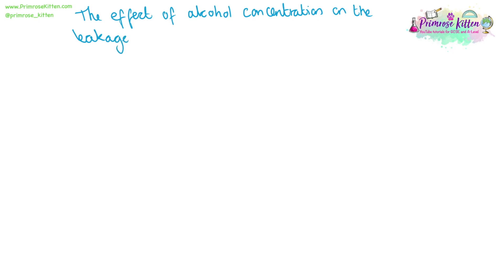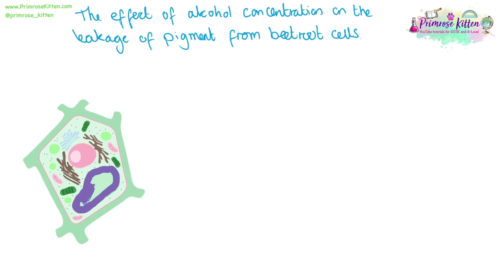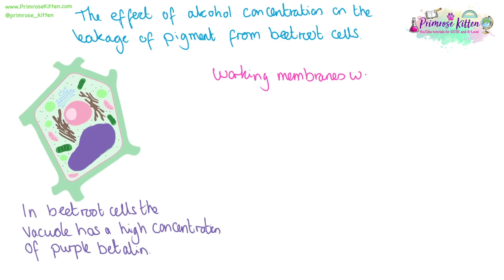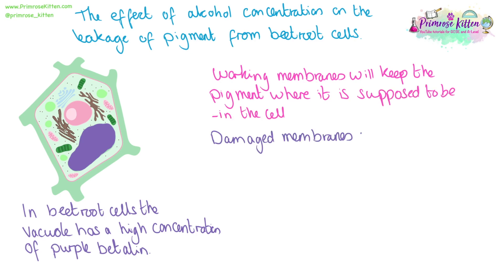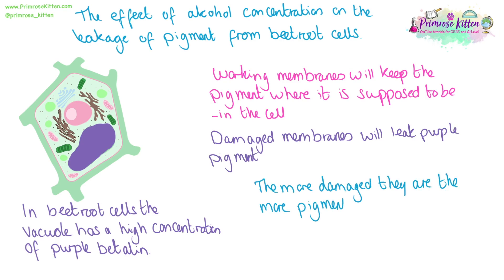In this video we're going to be looking at the effect of alcohol concentration on the leakage of pigment. The pigment within beetroot cells is within the vacuole that I've colored in here. If the membranes are working, functioning as they should, it will keep the pigment where it is supposed to be. However, damaged membranes will allow the pigment to leak out. And the more damaged that they are, the more pigment will leak out. And that is what we are going to be looking at today. We're going to be increasing the amount of damage that we do to the membranes, and then measuring the amount of pigment that leaks out.